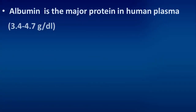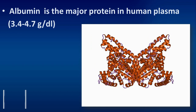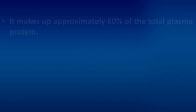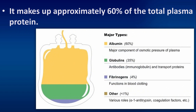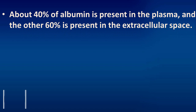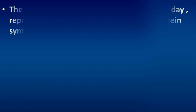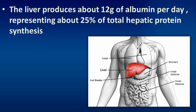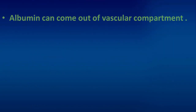Albumin is the major protein in human plasma, making up approximately 60% of the total plasma protein. About 40% of albumin is present in the plasma and the other 60% is present in the extracellular space. The liver produces about 12 grams of albumin per day, representing about 25% of total hepatic protein synthesis.